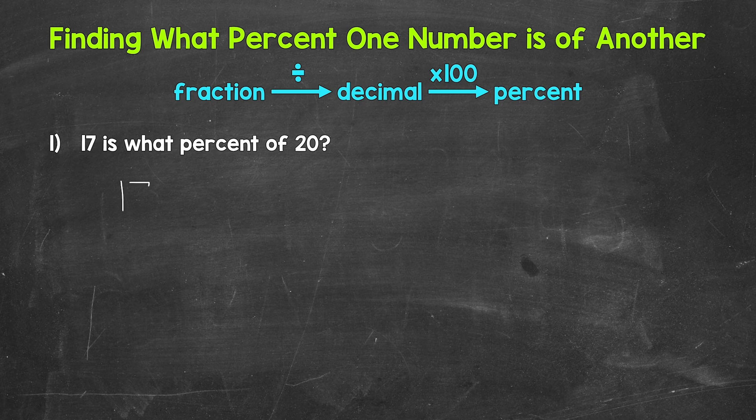To set this up as a fraction, we have 17 over 20 — the part, 17, over the whole amount, 20. So the part over the whole when we set this up as a fraction. To relate this to thinking about it like a quiz, 17 is the part of the quiz we got correct out of the whole amount, the total of 20. And now we divide.